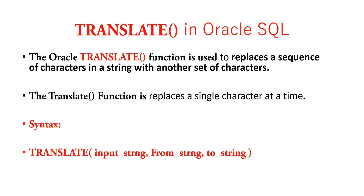For example, if your input string is 'x,y,z' and from 'x,y,z' you want to change 'x' with character '1', you will get an output of '1,y,z'. So basically the TRANSLATE function is character-based replacement.